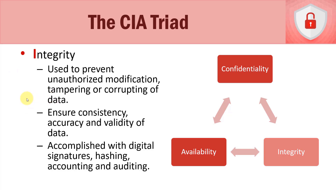Now let's take a look at integrity. Integrity goes hand in hand with confidentiality. Integrity essentially ensures the consistency, accuracy, and validity of data. The goal of integrity is to prevent unauthorized modification, tampering, or corruption of our data. For example, if we have data in transit going across the network, we want to make sure that it's not modified or tampered with, and we have methodologies for allowing us to do that. We also want to ensure that when the recipient receives it, they know that it hasn't been modified or tampered with.